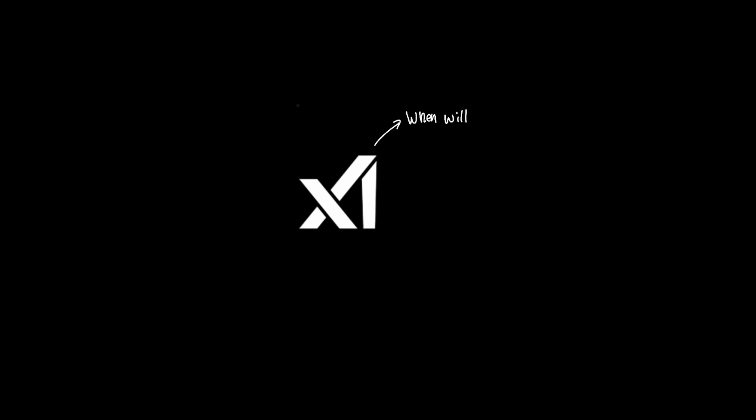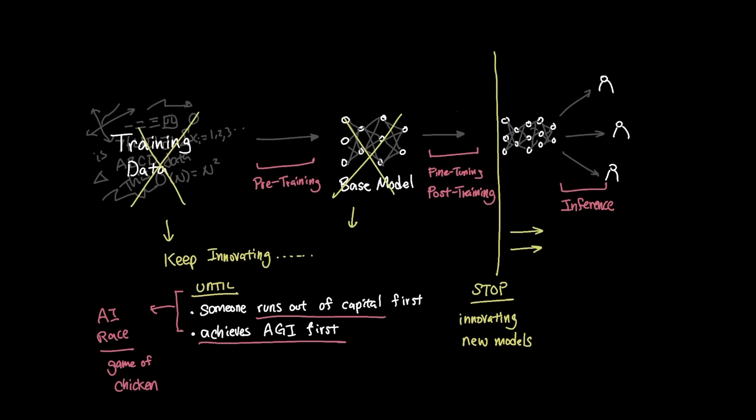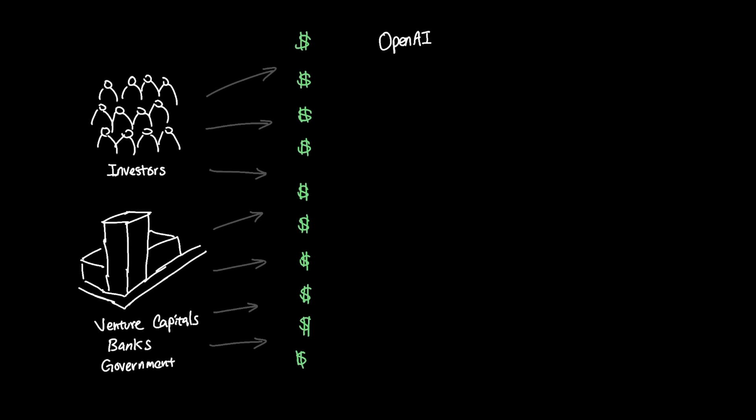Given this rule of the game, the ultimate question isn't when will xAI turn profits, but rather what company is best positioned to achieve AGI first. In other words, which company will likely run out of capital last while achieving AGI first?